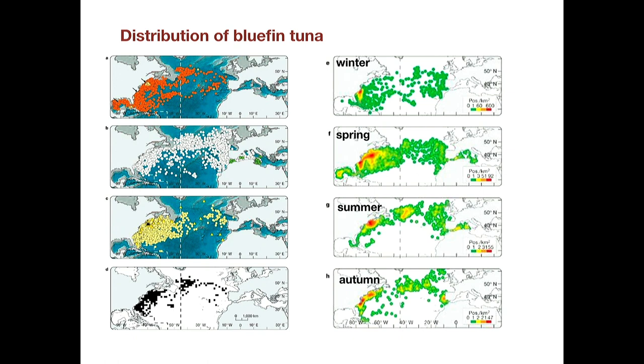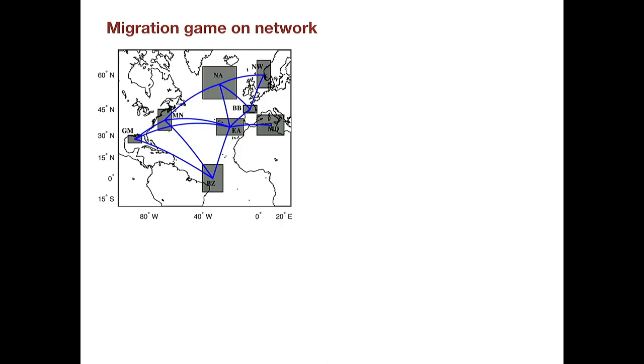They're distributed all over the North Atlantic with presence in the Mediterranean, quite a lot of time in the western Atlantic. Different seasons they are widespread but have hotspots of aggregations. They seem to migrate between these hotspots. We can use network theory approach to model migrations across different hotspots.